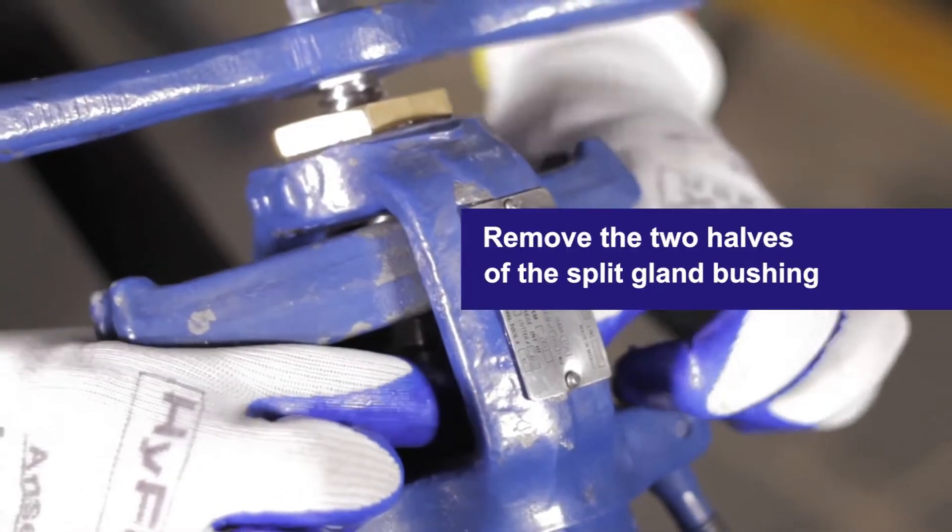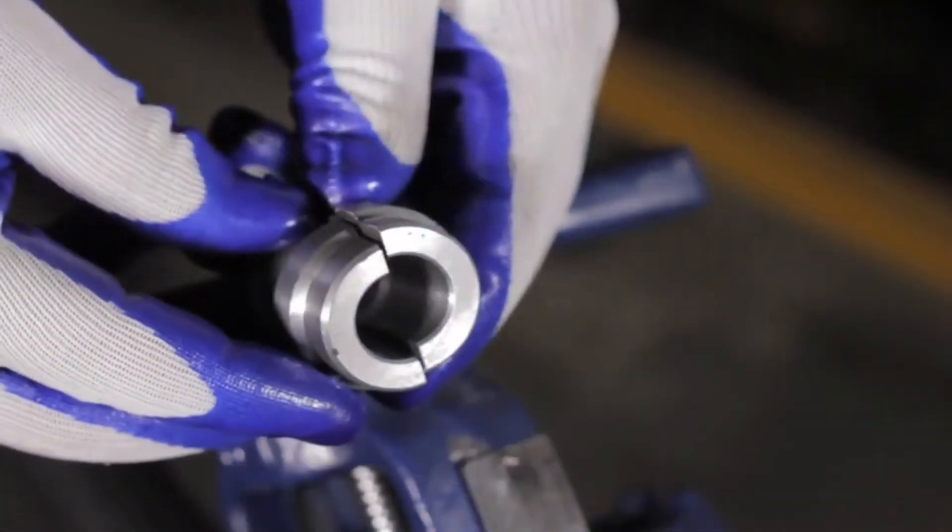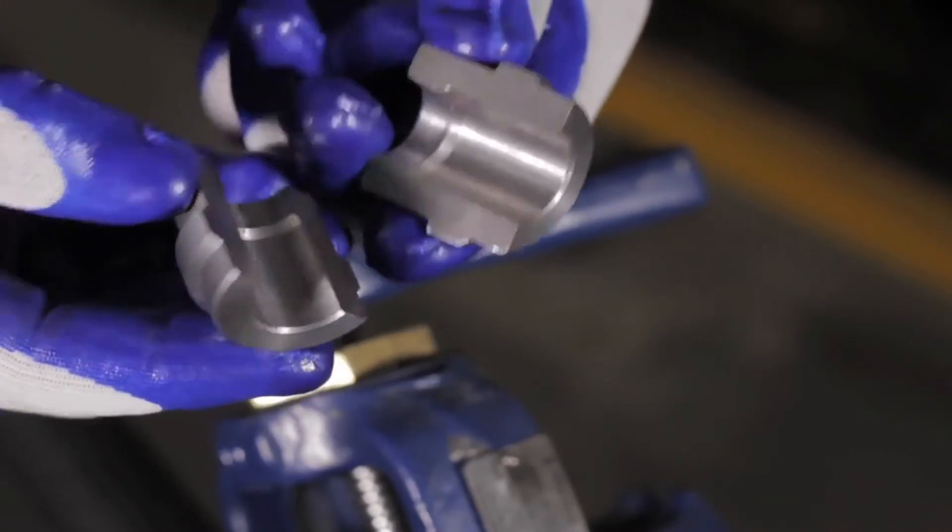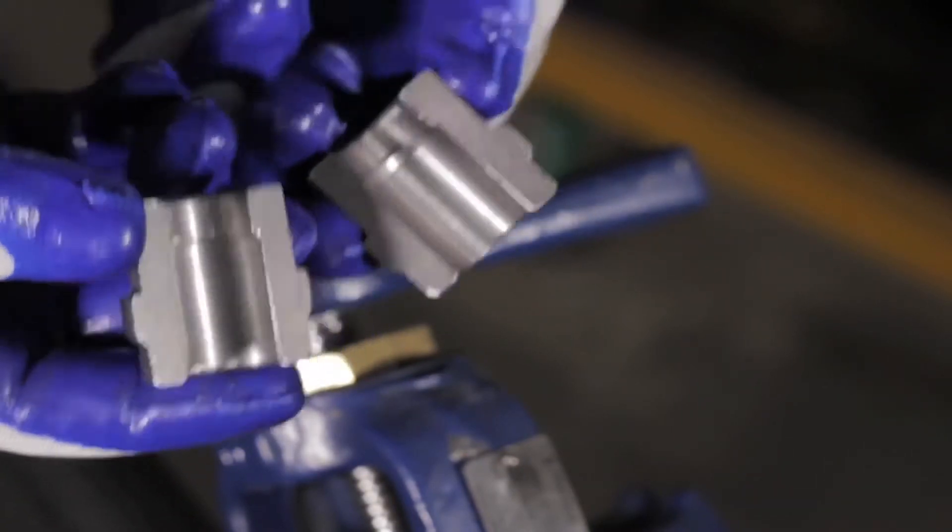Next, remove the two halves of the split gland bushing. Inspect them. If they are still in good condition, save them for reassembly. If they are damaged or corroded, replace them.